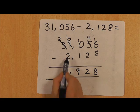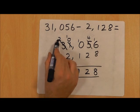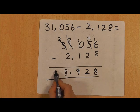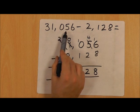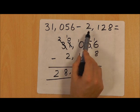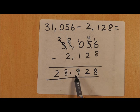So we're now going to do 10 subtract 2, which equals 8, and 2 subtract nothing there will leave us with 2. So 31,056 subtract 2,128 gives us 28,928.